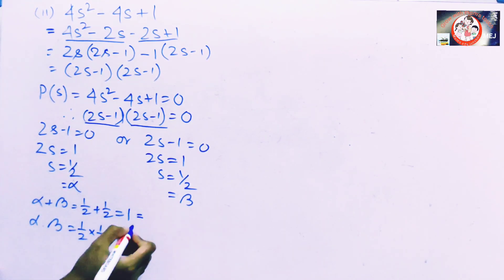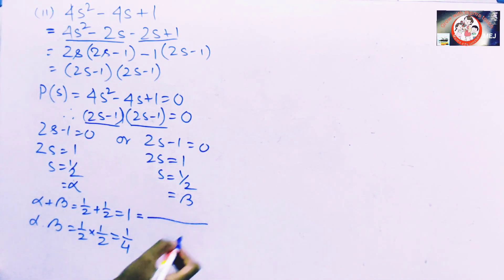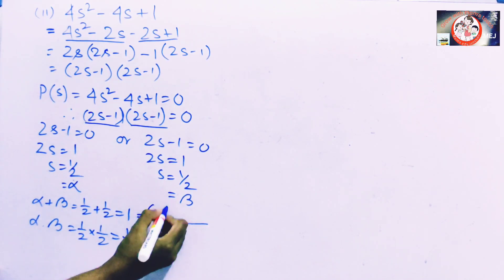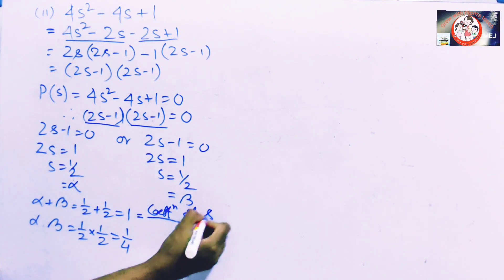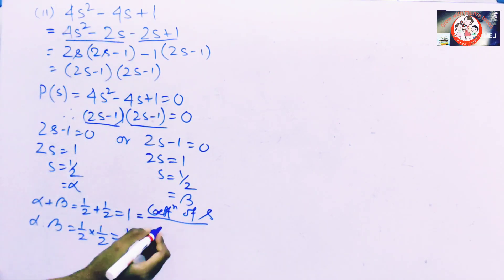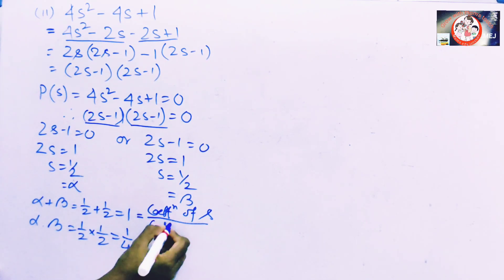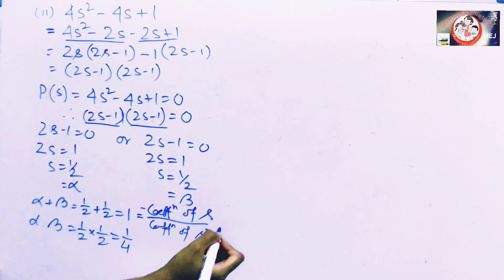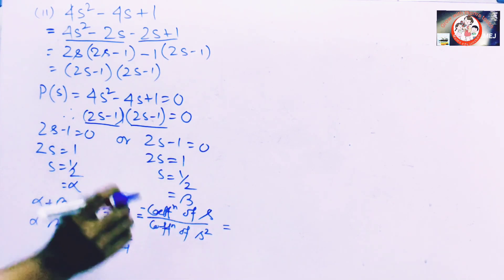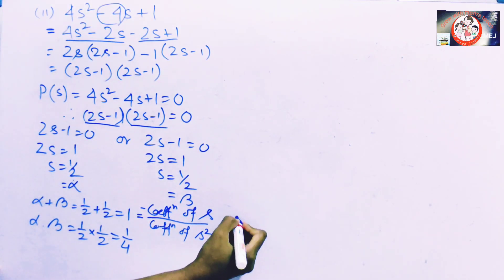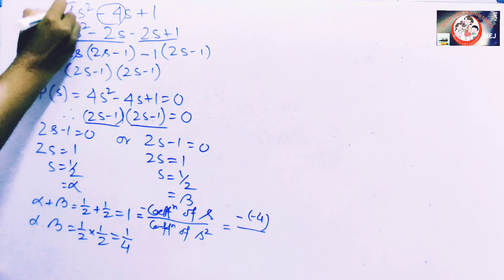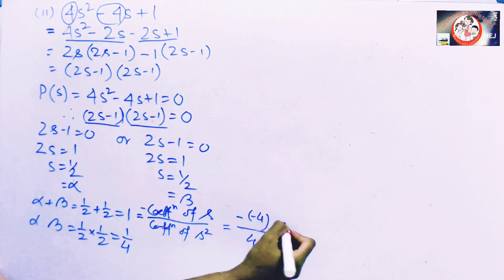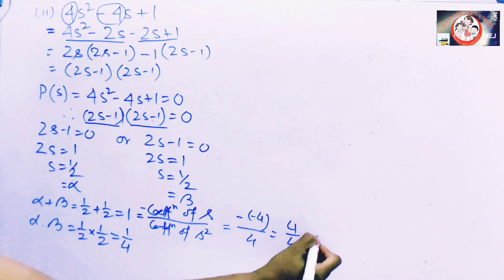Alpha plus beta equals 1. We also say this equals the negative of the coefficient of s divided by the coefficient of s². That is minus of minus 4 divided by 4, which gives 4/4 equals 1. This verifies the sum of zeros relationship.